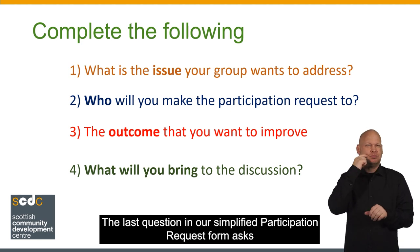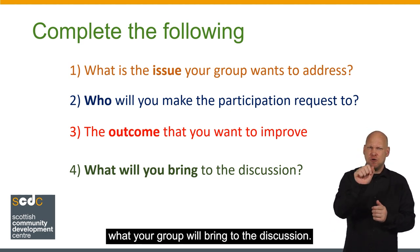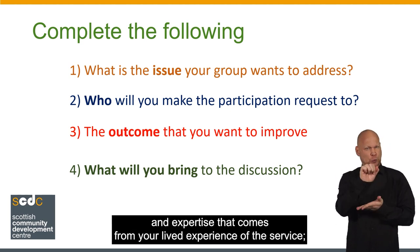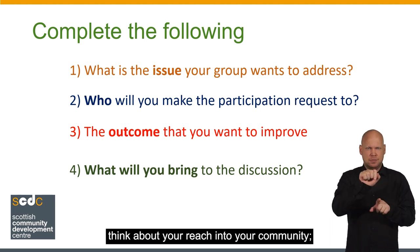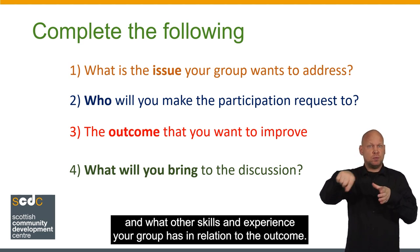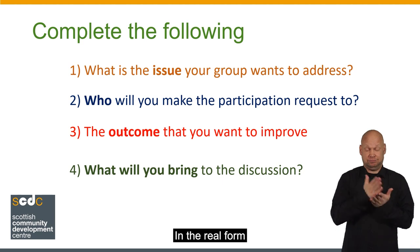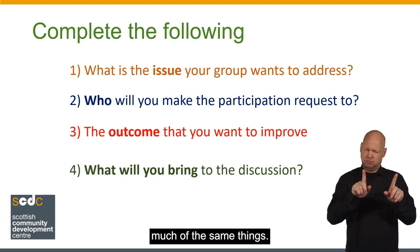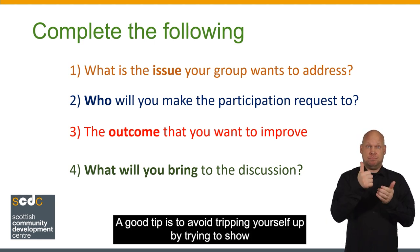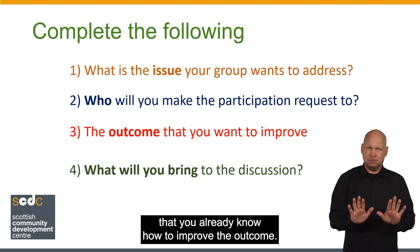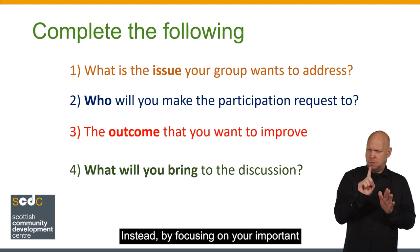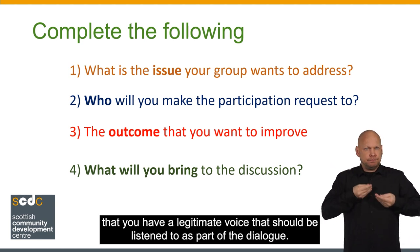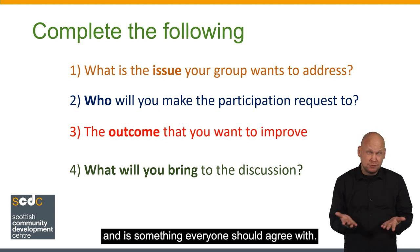The last question in our simplified participation request form asks what your group will bring to the discussion. When answering this question, think about your knowledge and expertise that comes from your lived experience of the service. Think about your reach into your community and what other skills and experience your group has in relation to the outcome. In the real form, you'll be asked at least three separate questions on why you should be involved and what you will bring, but your answers should cover much of the same things. A good tip is to avoid tripping yourself up by trying to show that you already know how to improve the outcome. Instead, by focusing on your important perspective based on lived experience, you can simply show that you have a legitimate voice that should be listened to as part of the dialogue. It's not much to ask and is something everyone should agree with.